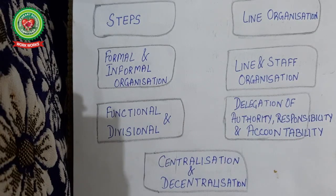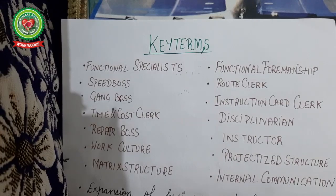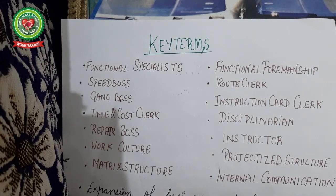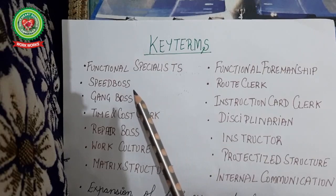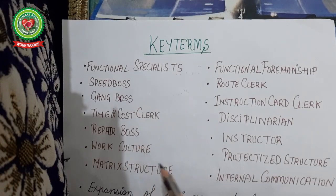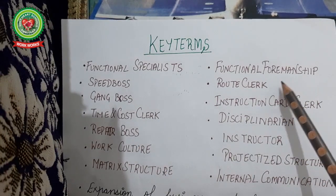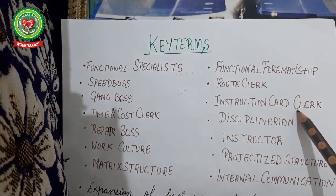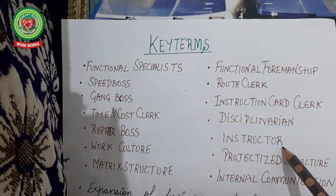In today's topic you will come across the following key terms — listen to the lecture properly so you are able to understand all the new key terms and answer questions. The key terms are: functional specialist, speed boss, gang boss, time and cost clerk, repair boss, work culture, matrix structure, functional foremanship, route clerk, instruction card clerk, disciplinarian, and instructor.